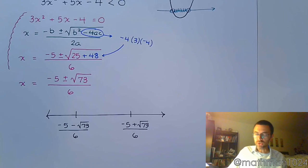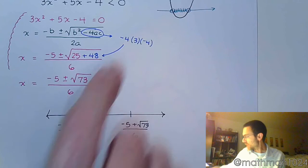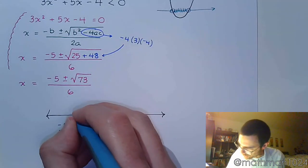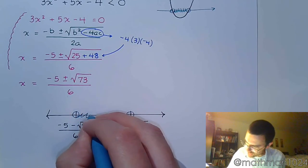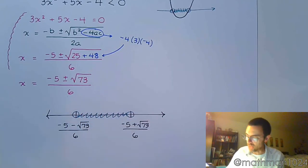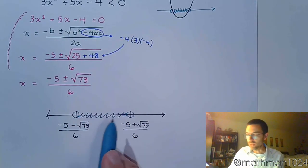And our solution set, as we showed above, is going to be this region that's in between those guys, because that's where your parabola dips down. So it's going to be everything in between these two values. And since it says less than, but it doesn't say equal to, these guys remain open.